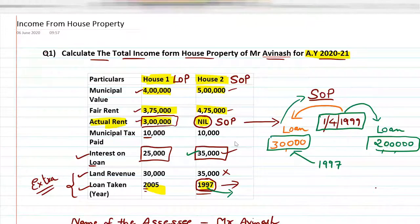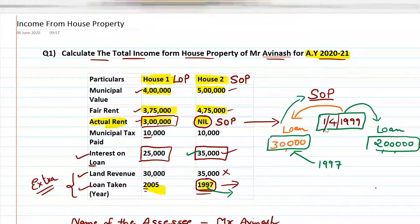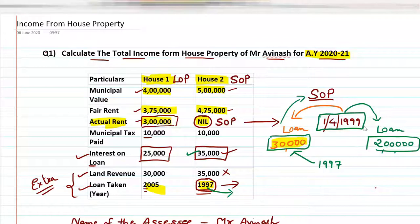We have to remember one important point regarding the limit for SOP. If a loan is taken before 1 April 1999, then the maximum limit is ₹30,000. And if the loan is taken after 1 April 1999, then the maximum limit is ₹2,00,000.